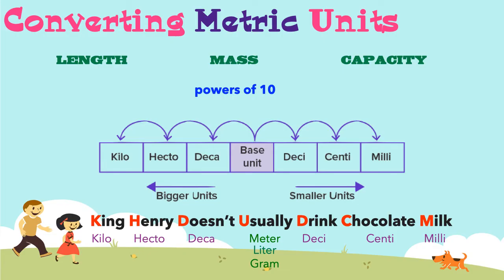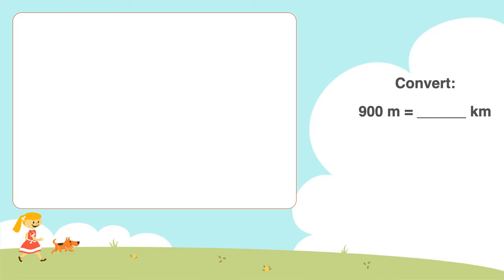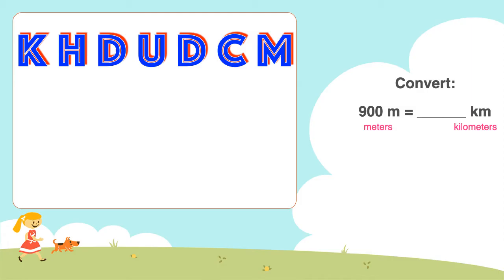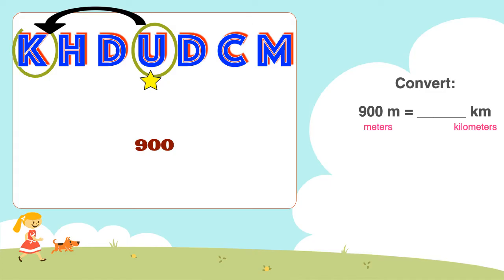Now let me show you how to use this method to convert between metric units. Let's say we want to convert 900 meters into kilometers. Because both of these are metric units, we can use the King Henry Doesn't Usually Drink Chocolate Milk method. In using this method, we begin with what we know. We know the number 900, which is represented by the word meters. Meters in this acronym is identified by the letter U. We want to move from meters to kilometers, which means we must move from U to K.